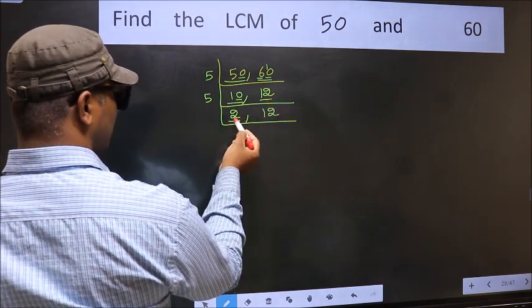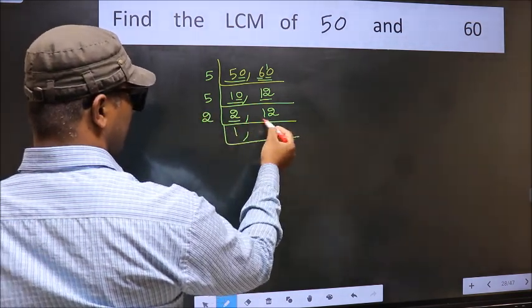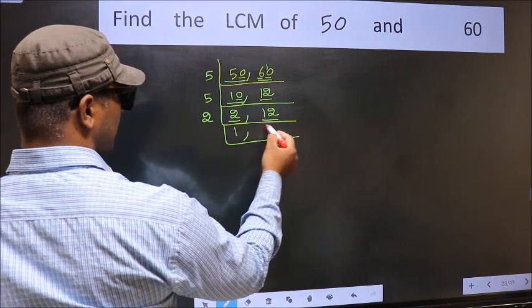Now here we have 2. 2 is a prime number, so 2 times 1 is 2. The other number 12. When do we get 12 in 2 table? 2 times 6 is 12.